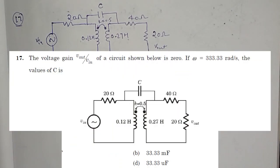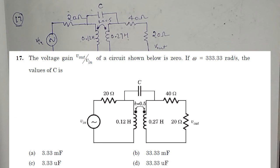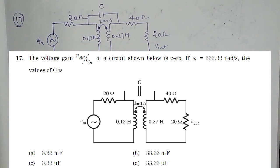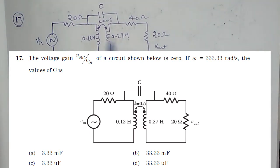We have given this circuit and in the question it is given that V0 by Vin, that is voltage gain of the circuit, is zero. We have to find the value of this capacitor for omega equals 333.33 radian per second.